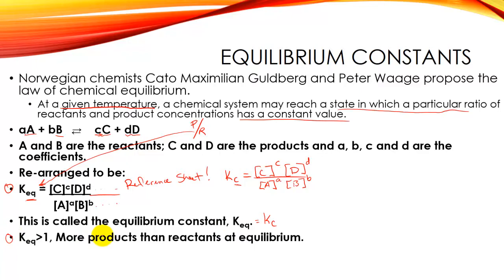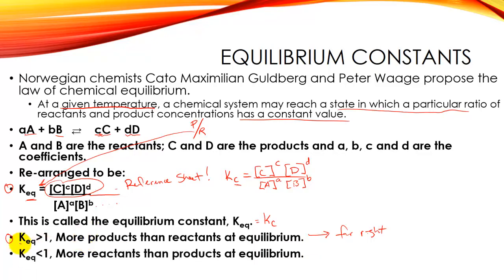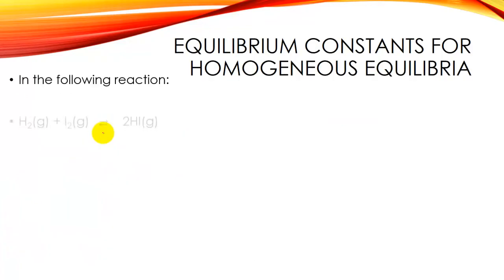A little bit of math: if we have a KEQ value greater than one, my numerator must have been significantly greater than my denominator, meaning I have more products than reactants — equilibrium lies far to the right. Flip side: if KEQ is less than one, my denominator is greater than my numerator, so I have more reactants than products — equilibrium lies far to the left. Anytime we write our KEQ or KC statements, it's always products over reactants, always P over R.